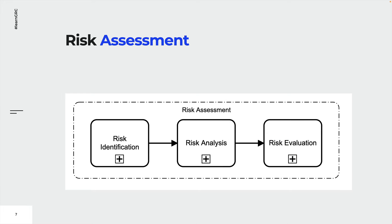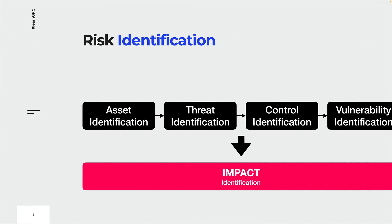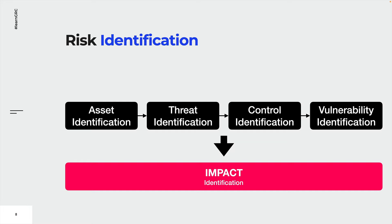Risk identification is the first step and prerequisite to the following steps. During risk identification, organizations try to determine possible adverse events that can harm their security objectives. Therefore, organizations need to identify their assets, vulnerabilities, already existing controls, and the current threat landscape. With this information, risks and the associated negative consequences and impacts can be determined.